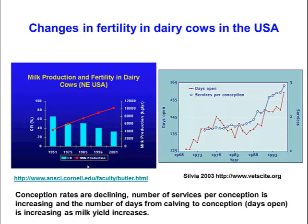Graphically, the trend in reproductive performance is illustrated in this graph. You can see how since the 1950s there's been a progressive increase in milk yield. If we look at conception rates to artificial insemination back in the 1950s, we're in the order of 60% or more, but now they've declined to 40% or less. So you get over a 20% reduction in conception rate over the last 50-60 years in dairy cows.